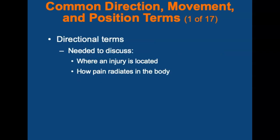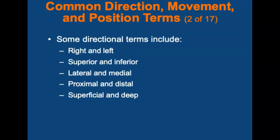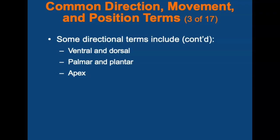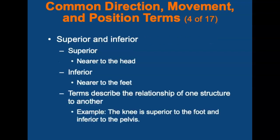You need to know the correct directional terms to discuss where an injury is located or how pain radiates in the body. Some directional terms include: right and left, superior and inferior, lateral and medial, proximal and distal, superficial and deep, ventral and dorsal, palmar and plantar, and apex. The terms right and left refer to the patient's right and left sides, not your own. The superior part of a body part is the portion nearer to the head from a specific reference point, and the part nearer to the feet is the inferior portion. For example, the knee is superior to the foot and inferior to the pelvis.